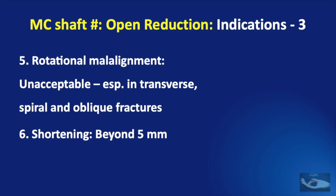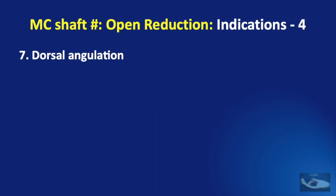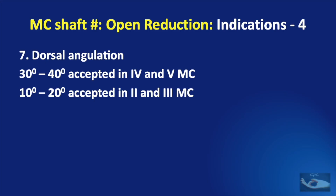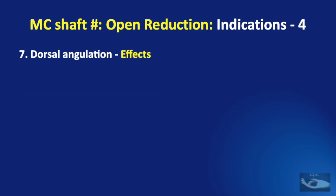Apparent shortening of the finger due to the metacarpal shaft fracture can be accepted up to 5 mm; beyond that it is an indication for open reduction. Dorsal angulation is a fairly constant finding in metacarpal shaft fractures. About 30 to 40 degrees of angulation can be accepted in the 4th and 5th metacarpal shaft fractures, but only 10 to 20 degrees can be accepted in the 2nd and 3rd metacarpal shaft fractures. Even within these acceptable levels, some effects may warrant open reduction.